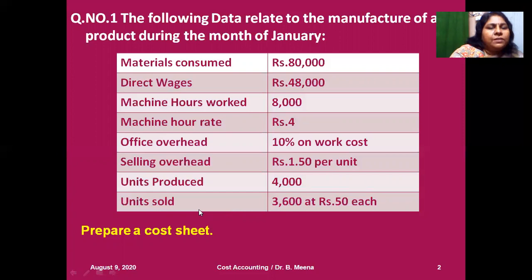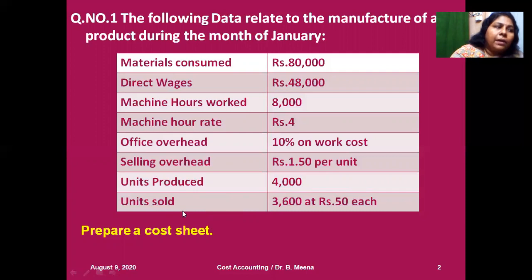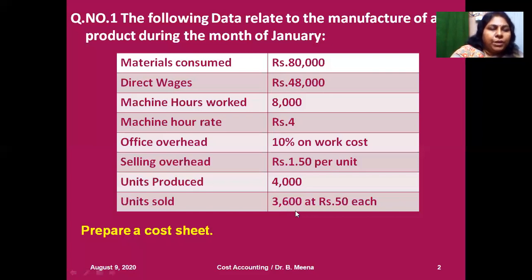From this information we can conclude this cost sheet falls under the closing stock valuation model. Units produced is 4,000 but units sold is only 3,600. So 400 units remain unsold — that we consider as closing stock. Whenever units produced and units sold are given but differ, there is a closing stock hidden in the problem.